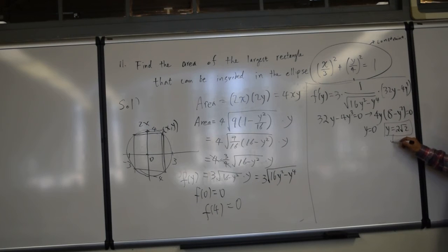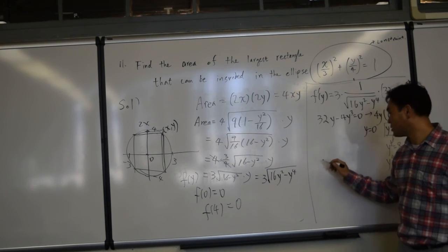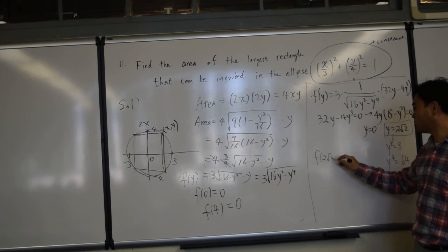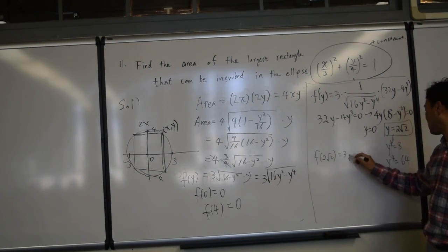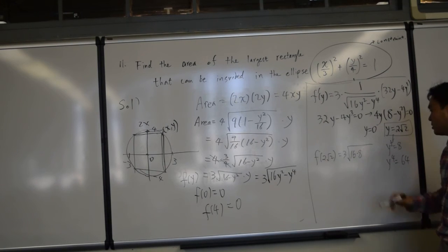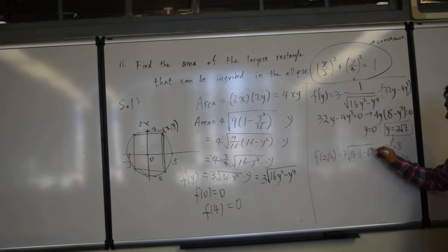So that means y squared is 8, and y to the fourth is square of this, which is 64. So when I plug it in here, f of 2 radical 2 is 3 times square root of 16 times 8 minus 64.